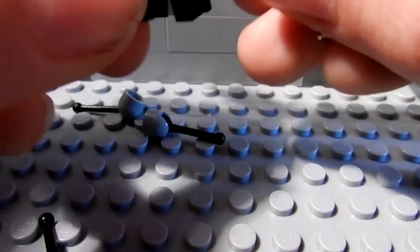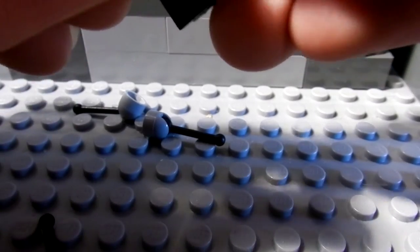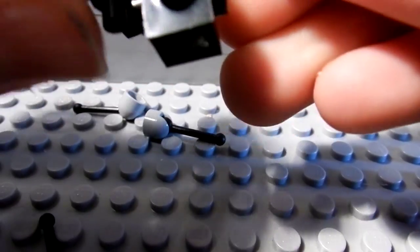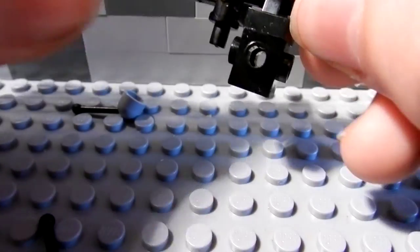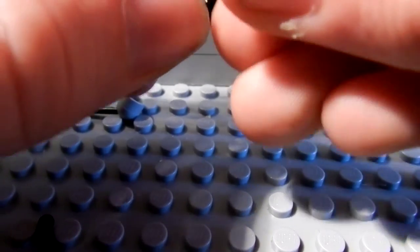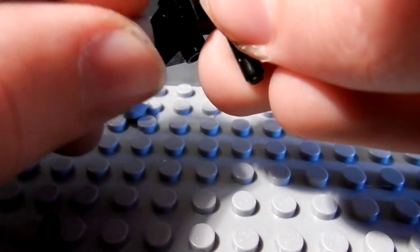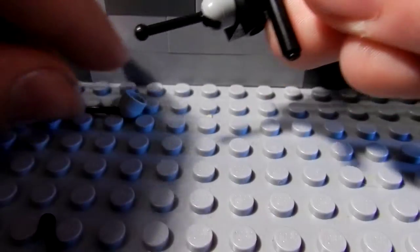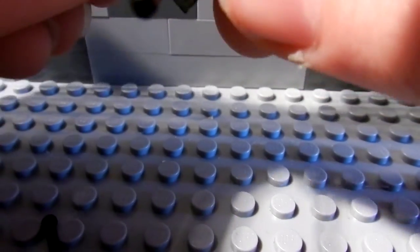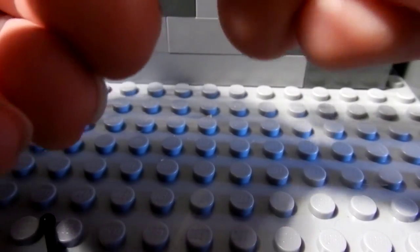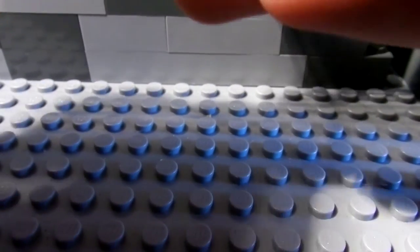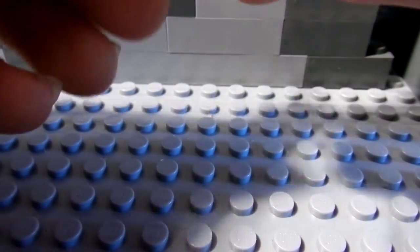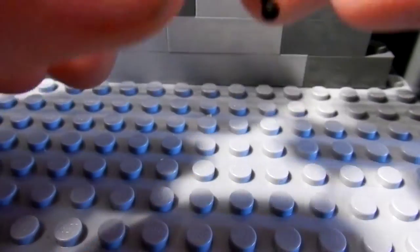Then you attach this piece here to the other connector piece. Then you get the four legs and attach them on one by one. You just go like this, and the other one, and this is what you get once you've attached them together.